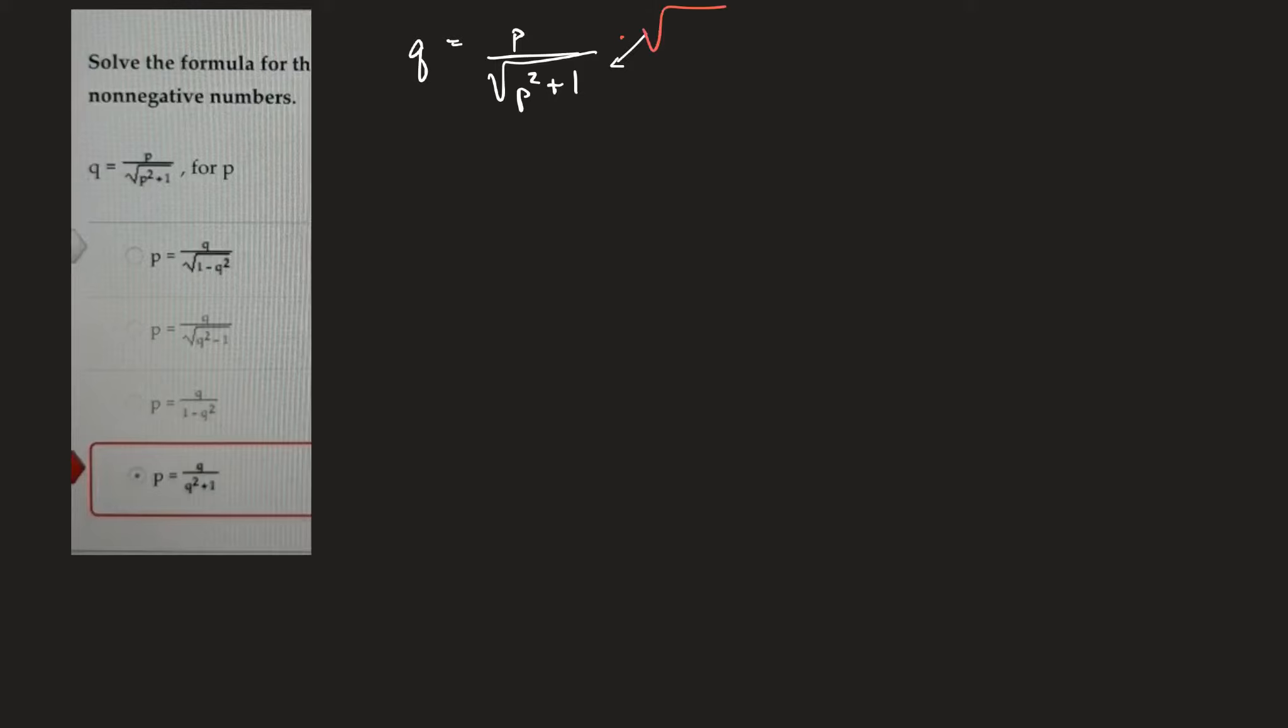Lots of ways to do it. p squared plus 1, p squared plus 1. So these cancel out. So I'm left with q times the square root of p squared plus 1 is equal to p.